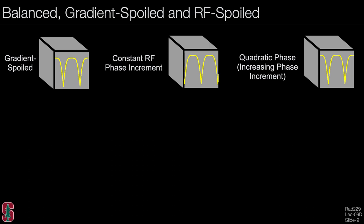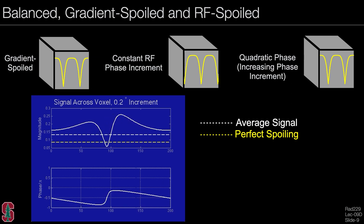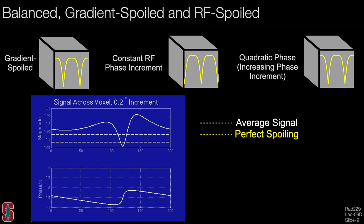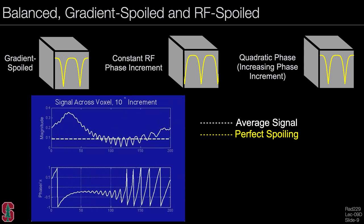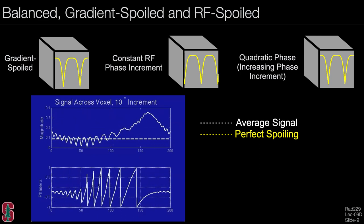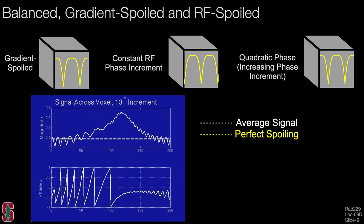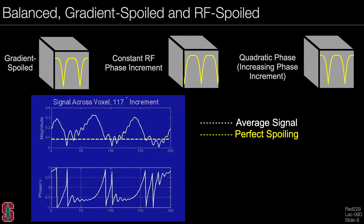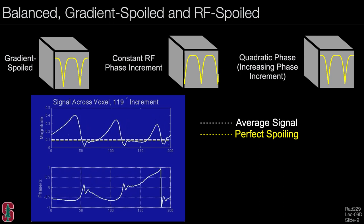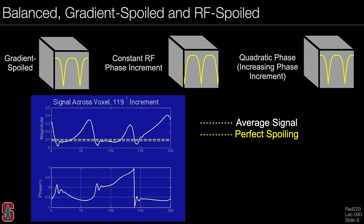With a very small phase increment, the profile resembles a balanced SSFP profile but with some asymmetry due to shifting. A larger phase increment moves the signal much more quickly. At 117 degrees, a typical value used, you really cannot track what is happening, but the dashed line shows that the overall average signal matches the case of perfect spoiling. Going slightly off this value, the average signal no longer matches perfect spoiling, so the choice of increment is really important.